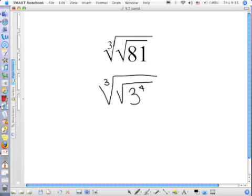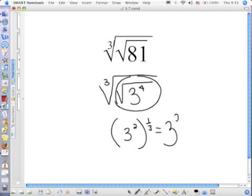Okay, so starting from the inside, this right here is what as a fraction? 3 to the 4 halves or 3 squared. Right? And that's being raised to the 1 third. Multiply your exponents. What's 2 times 1 third? 2 thirds.